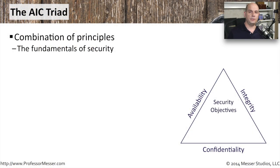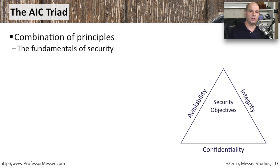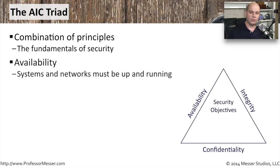The fundamentals of security are often rolled up into a set of principles called the AIC triad. This stands for availability, integrity, and confidentiality. The availability part of the triad refers to systems being up and running. You want to maintain availability of all of your servers and all of your networks and make them available for everyone.